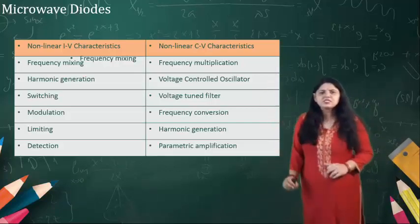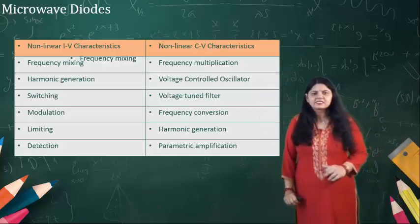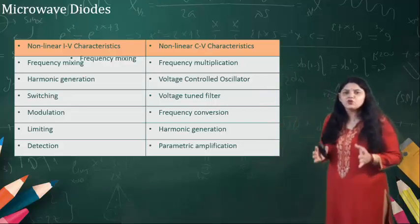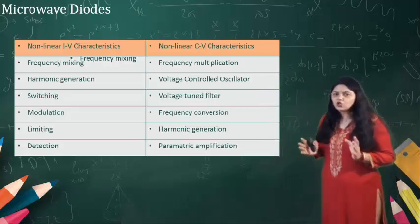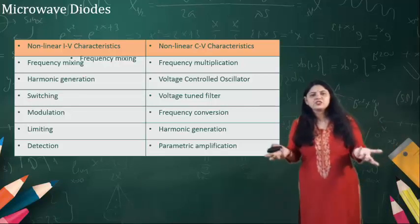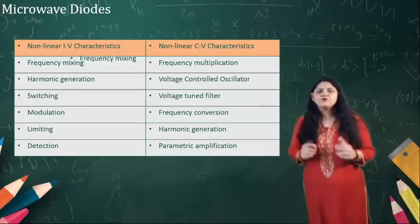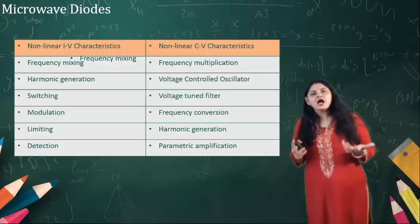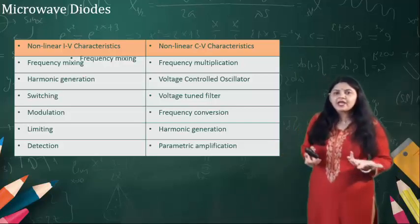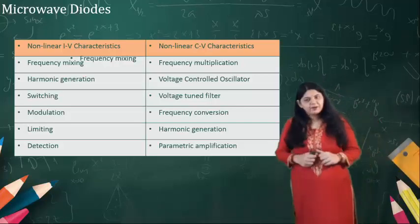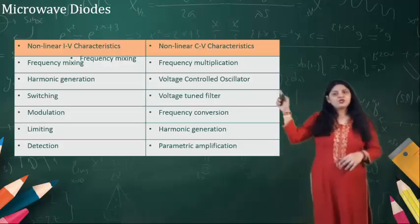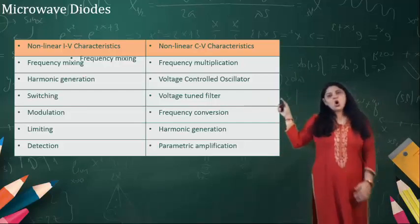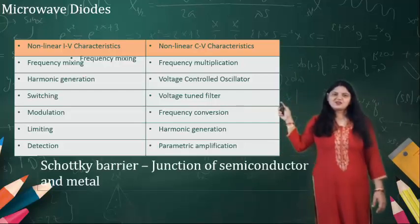And using the non-linear CV characteristics, we achieve frequency multiplication, voltage controlled oscillator, voltage tuned filter, frequency conversion, harmonic generation, and parametric amplification using this property of the diode.